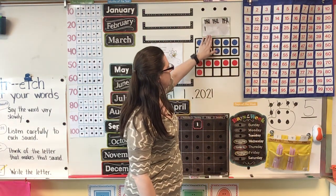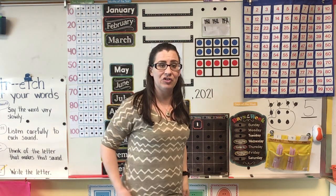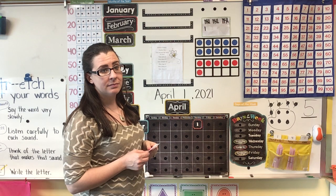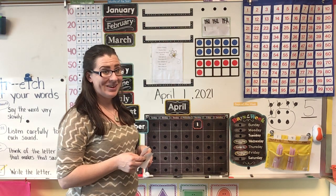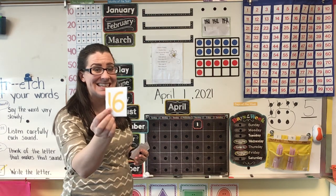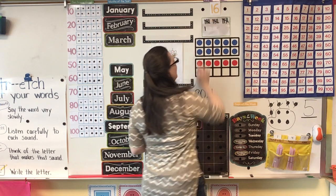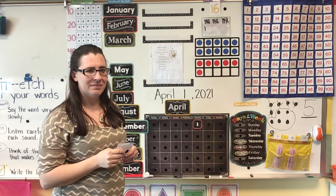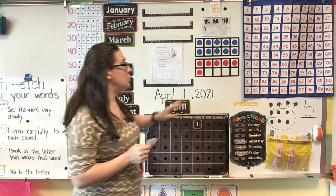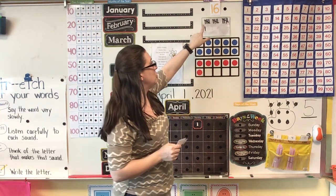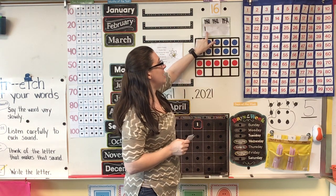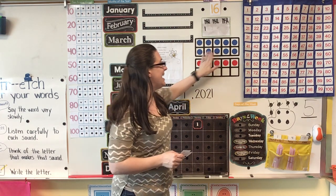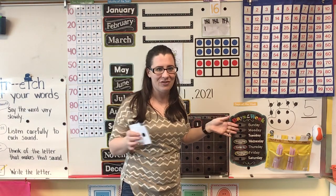Now I need you to look right here at our tallies and right here at our 10-frame and see if you can figure out what number of the day it is today. What number is it? Did you get it? If you said the number 16, then you are right. You might have counted each of these, or maybe you looked and saw that there were three groups of five and one — five, ten, fifteen, sixteen. Or you might have looked at the 10-frame and seen that there were 10 and six more, which is 16. There are a lot of different ways you could have figured that out.